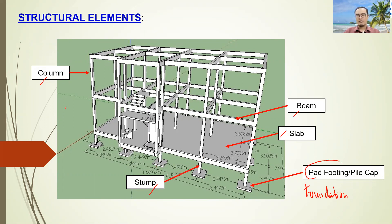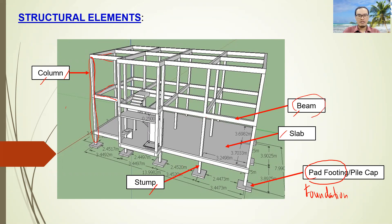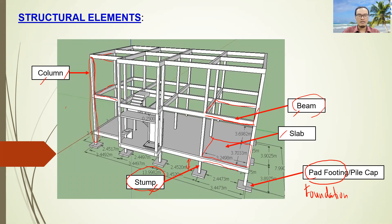Today I will talk about the pad footing. As you can see in the slide, you can see the column, which is the vertical element that will support all the beams. The beams are the horizontal elements which connect from column to column. You can see the slab which is supported by the beam, as well as the stump, which is the short column beneath the earth connecting the column to the foundation.